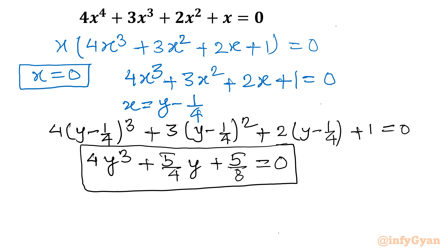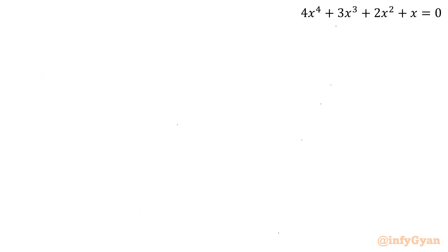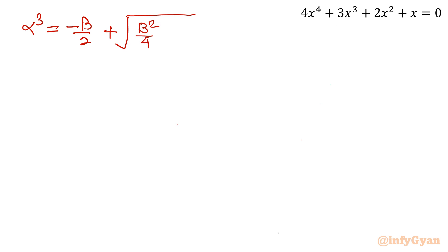Because there is no y² term, I can now apply Cardano's method. The general depressed cubic for Cardano's method is y³ + ay + b = 0. We find cube roots alpha and beta using: alpha³ = −b/2 + √(b²/4 + a³/27), and then use cube roots of unity omega to express all three roots as alpha + beta, alpha·ω + beta·ω², and alpha·ω² + beta·ω.